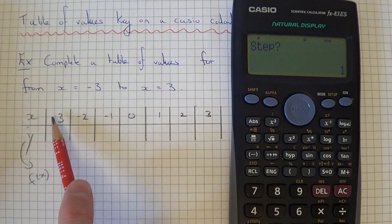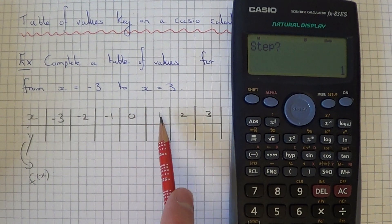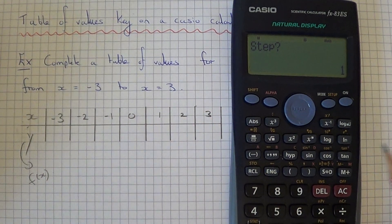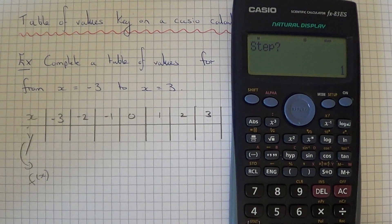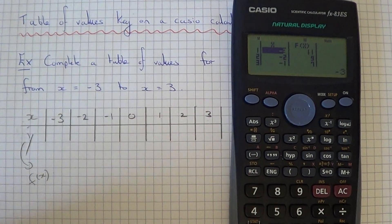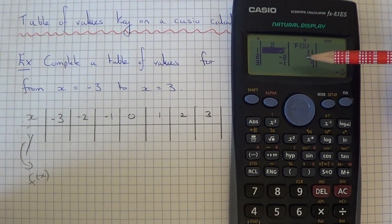The step size is what our x coordinates are going up in, so it's increasing in 1s. That's already in memory so we can just hit the equals here. We've now got our table of values.